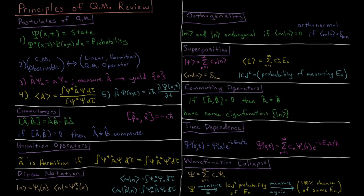Regarding Hermitian operators, we define an operator as Hermitian if it obeys the property that the integral of the complex conjugate of the wave function times the operator acting on the wave function over all space equals the integral of the wave function times the complex conjugate of the operator acting on the complex conjugate of the wave function. This seems abstract, but more useful examples are explored later.